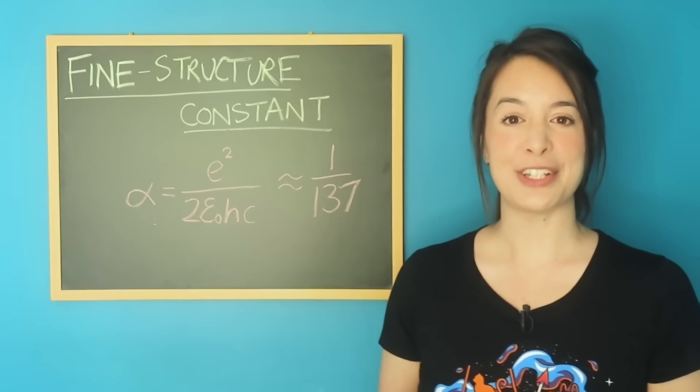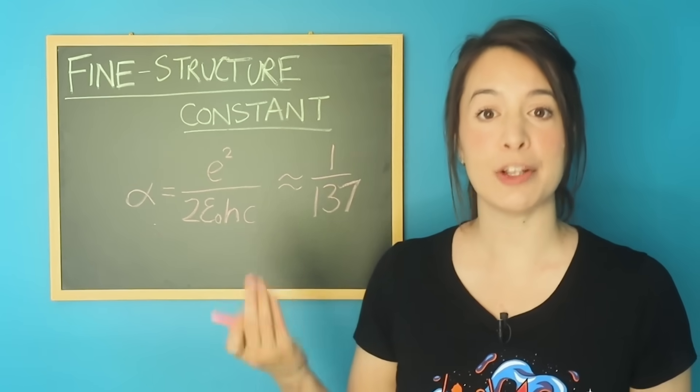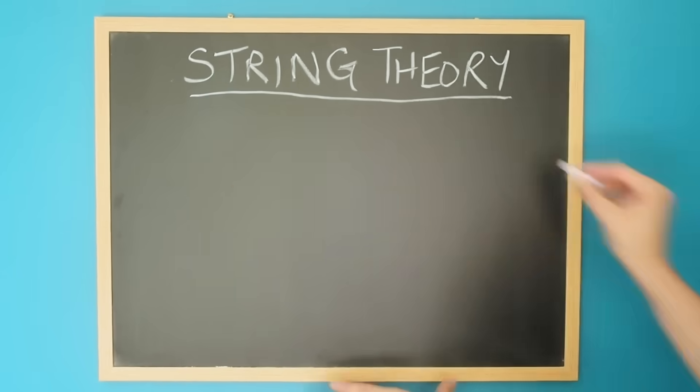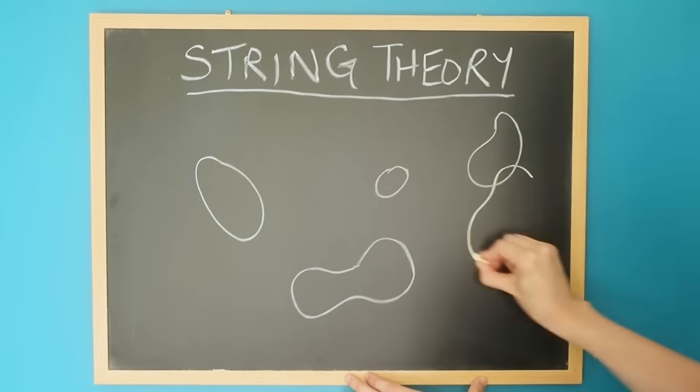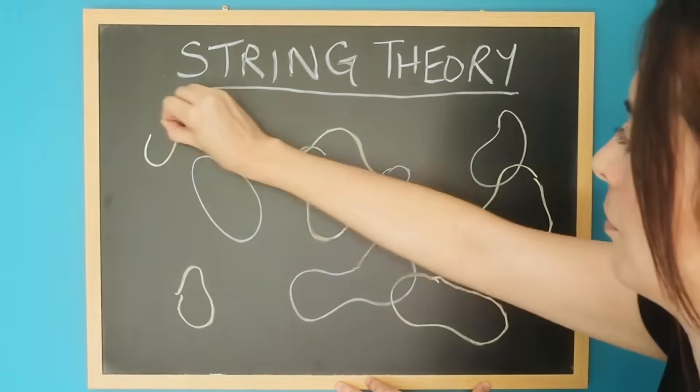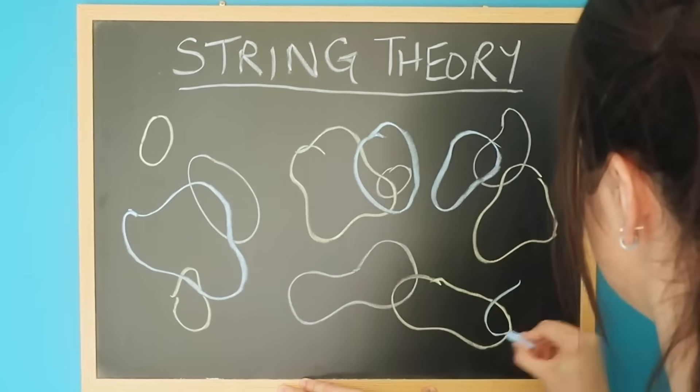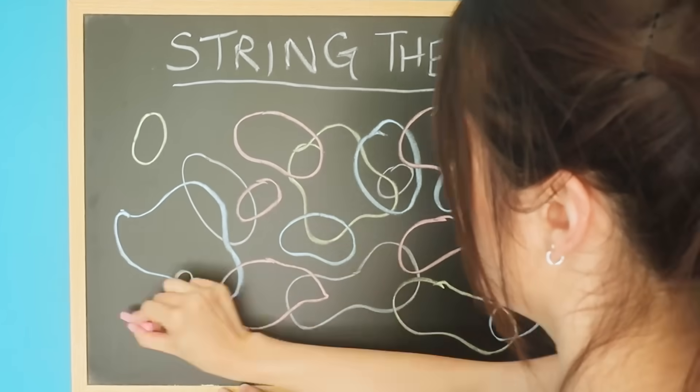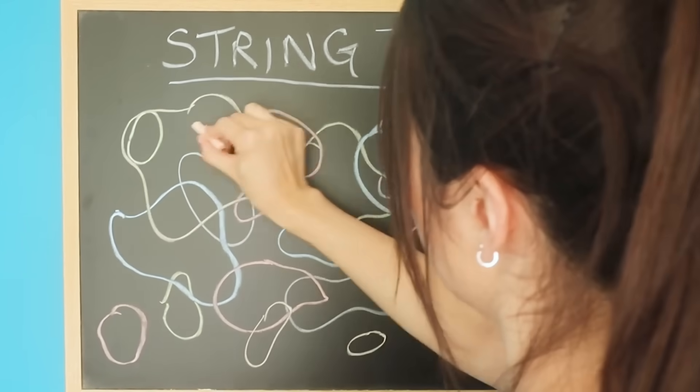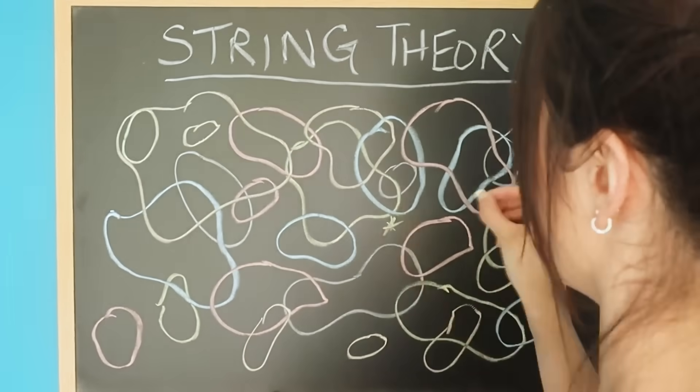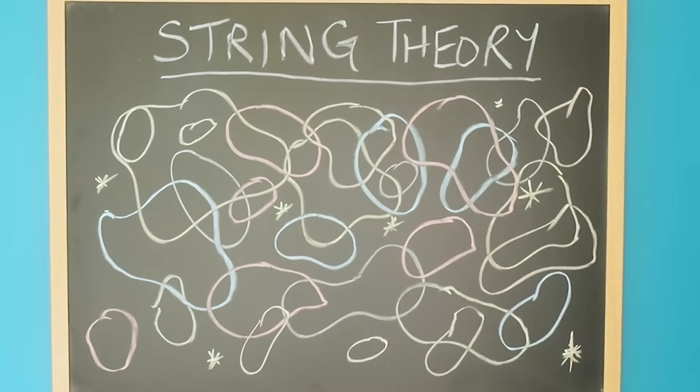Another reason some scientists think the constants might vary is because of newer theories of physics, like string theory, which tries to unify gravity and quantum mechanics, one of the biggest unresolved challenges in physics. These theories involve extra spatial dimensions to our current theories, and we would perceive changes to these spatial dimensions as the fundamental constants changing.